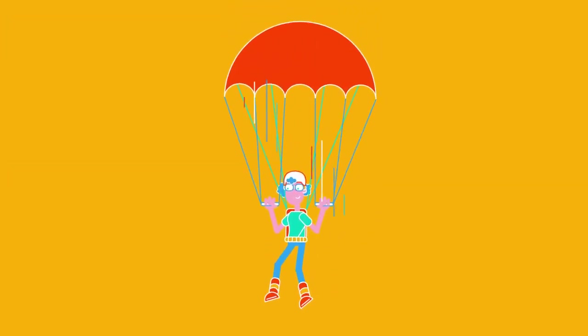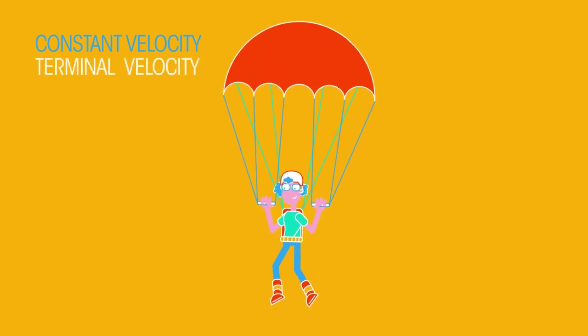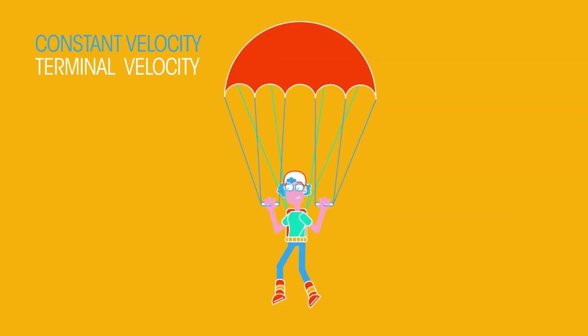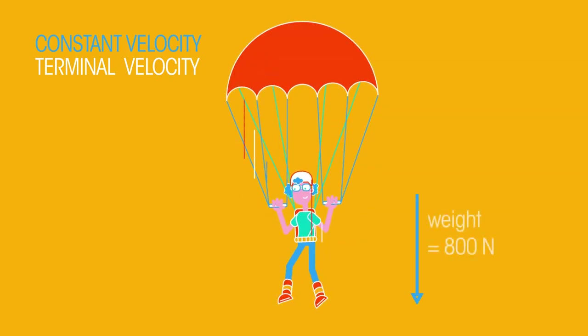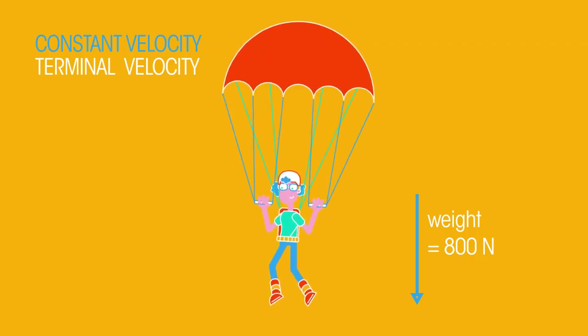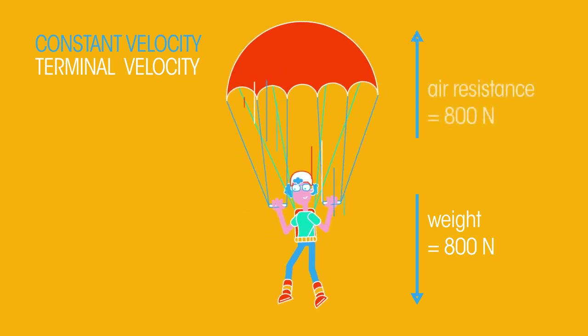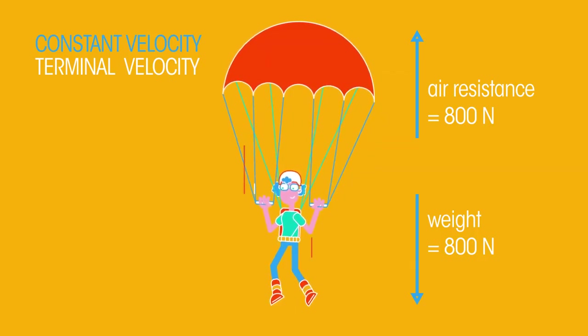This parachutist is falling through the air at a constant velocity, also known as terminal velocity. There is a force of 800 newtons acting downwards on the parachutist. This is the parachutist's weight or the force due to gravity. At the same time, the parachutist experiences an upward force of 800 newtons due to air resistance. These forces are balanced, so she will be falling at a constant velocity.